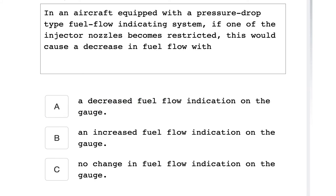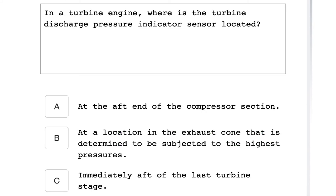In an aircraft equipped with a pressure drop type fuel flow indication system, if one of the injector nozzles becomes restricted, it will cause a decrease in fuel flow with an increase in fuel flow indication on the gauge. In the turbine engine, where is the turbine discharge pressure indicator sensor located? Immediately after the last turbine stage.